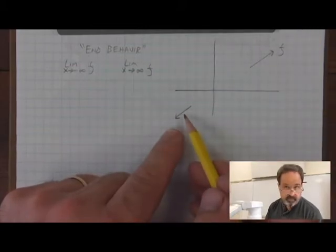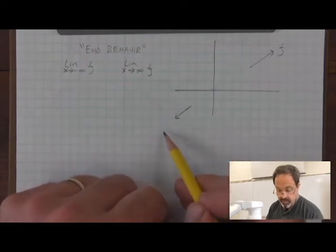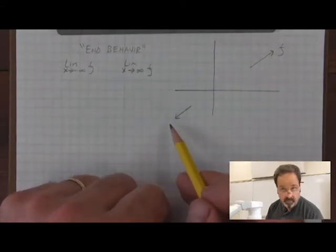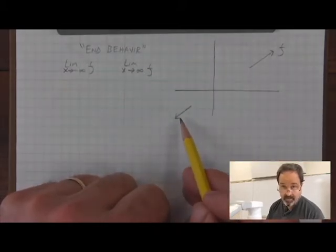And the end behavior on the left, as x goes to negative infinity, appears that the values of the function are going to keep going down. So the limit as x goes to negative infinity is negative infinity.